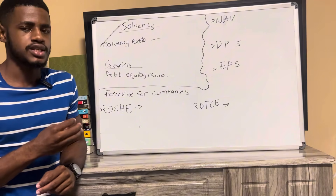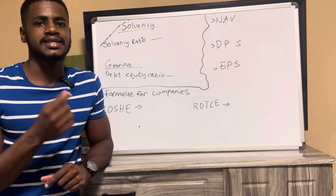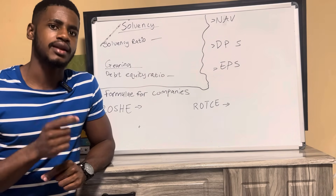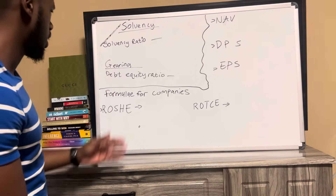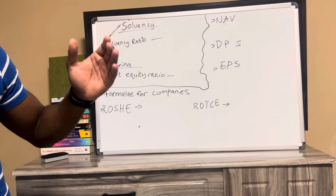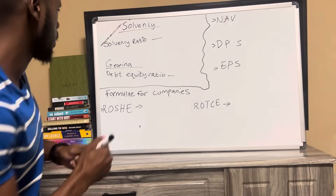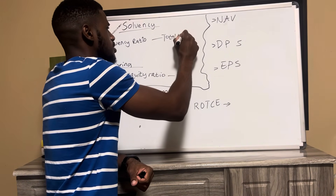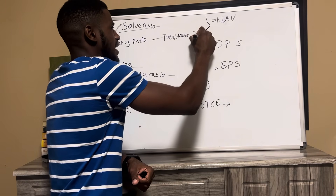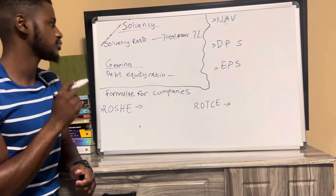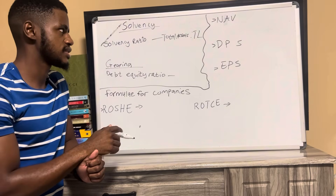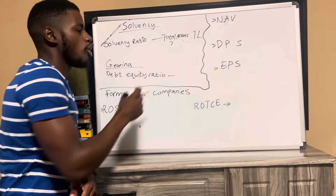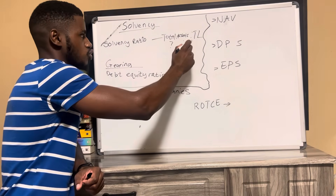What is the solvency ratio? Solvency — we want to know if the total assets that we have would be able to cover the total liabilities we have as a business. The formula for solvency is total assets is to total liabilities. We add all of our assets, put the answer here, then add all of our liabilities and put that answer here.